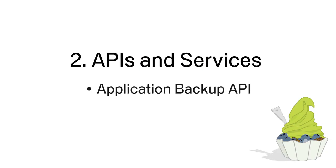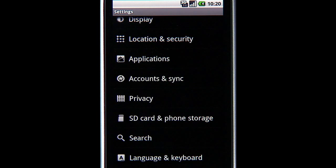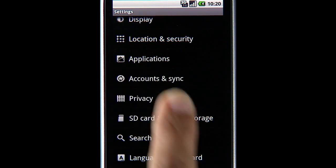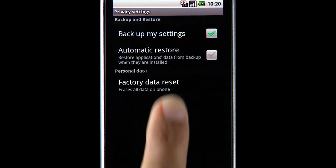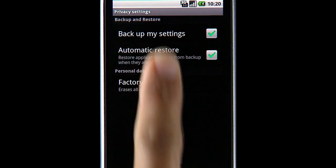The app backup API enables any app to have its data backed up and then restored when installed on a new device. The feature is controlled by users via the automatic restore setting on their device.